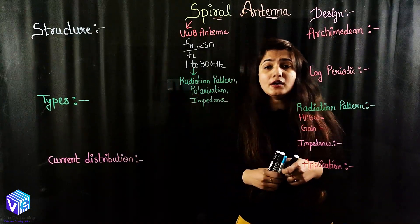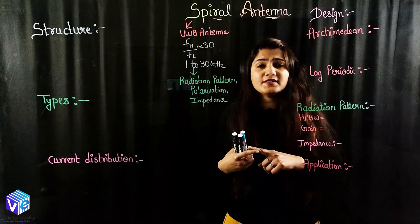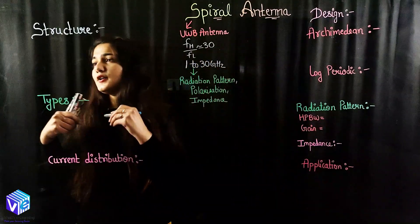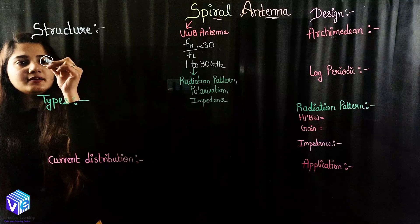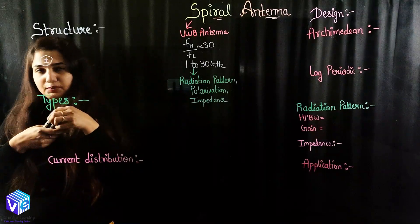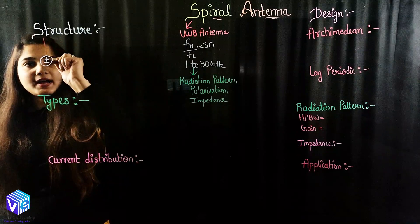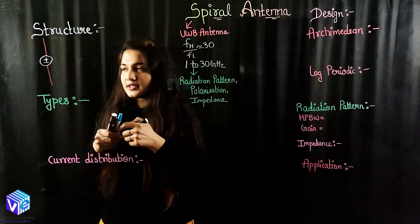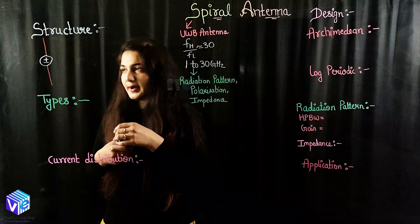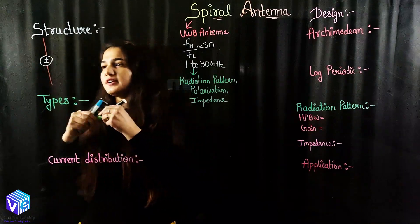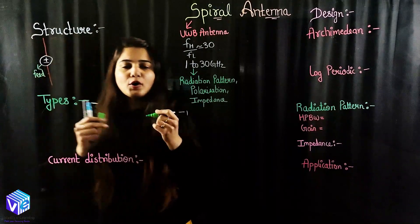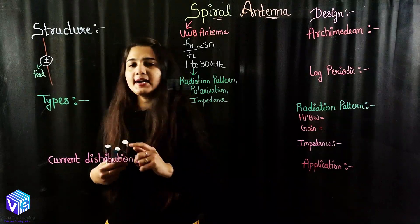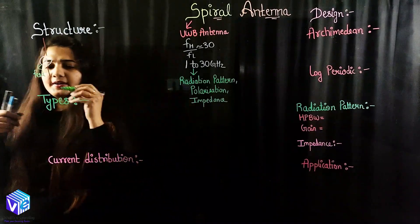Now coming to the structure. We all know what a dipole antenna is. If this is my feed — I am representing the feed with plus and negative signs — this is my dipole antenna. The dipole antenna just consists of two equal sides, and these sides can have a total length of lambda by 2. What I can do is take a two-wire transmission line, fold its ends at 90 degrees, and I will be getting a dipole antenna.